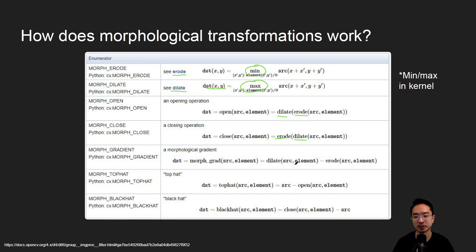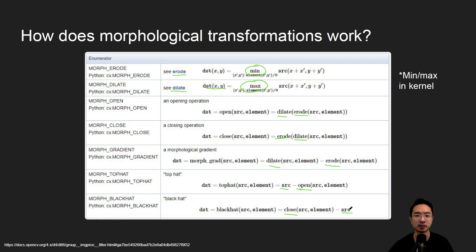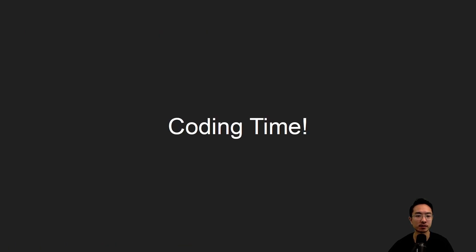For the gradient operation, you have dilation on the image and you subtract it by erosion. You have top hat, which is the original image and you subtract the open operation. And then you have black hat, which you take the close operation and then subtract the close. When we get into the coding example, we'll see the results of these operations.